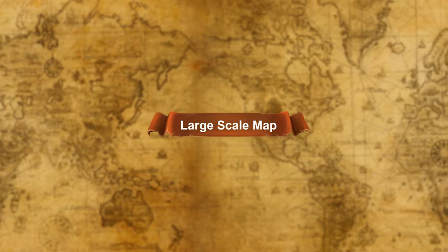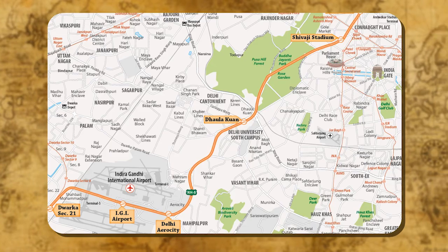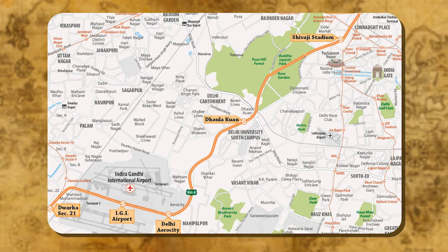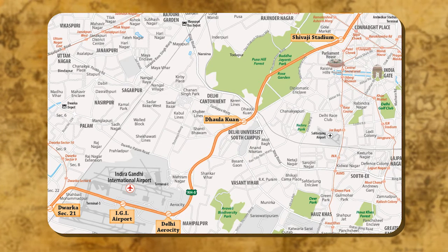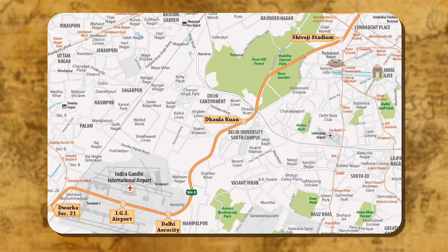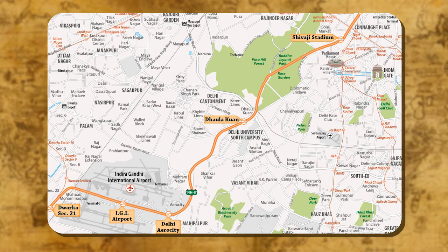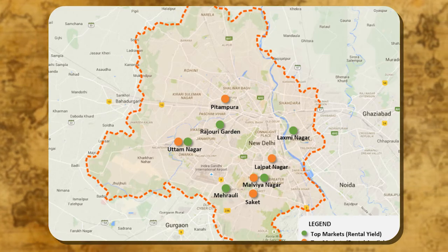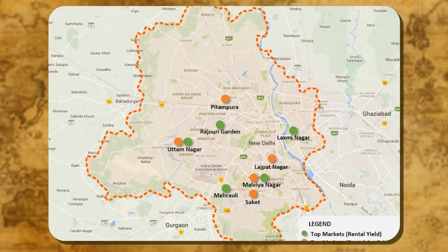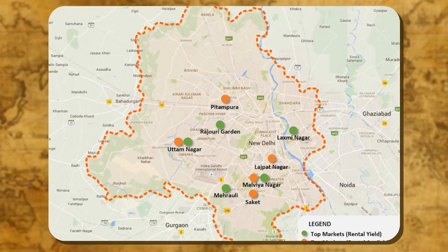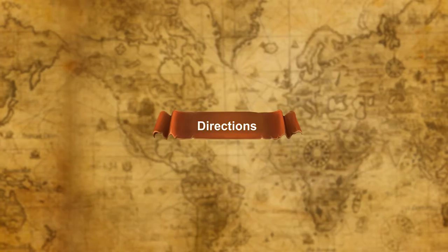Large scale map. If we show a part of Delhi or any town or village on a sheet of paper, it is known as a large scale map. On a large scale map, information can be given in greater detail.